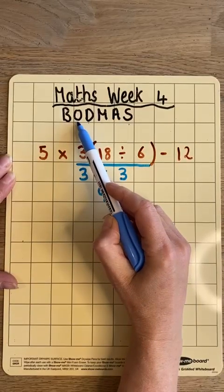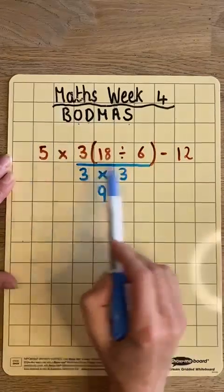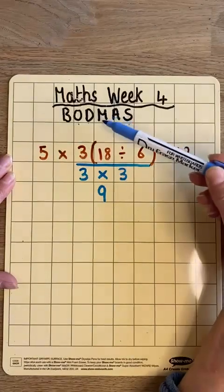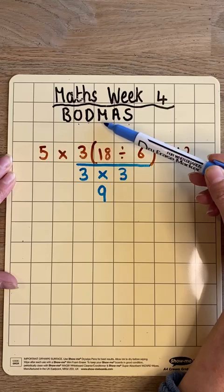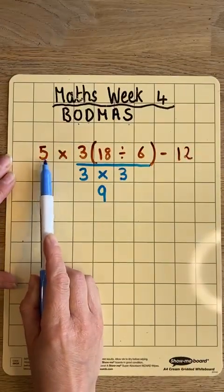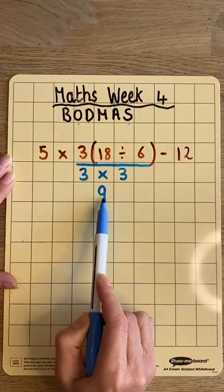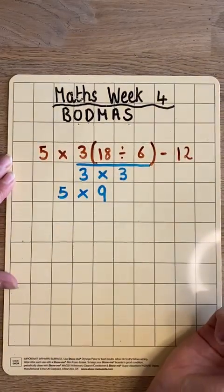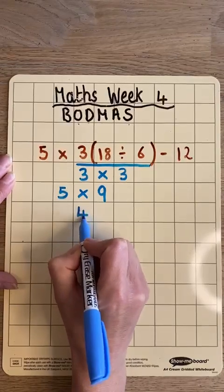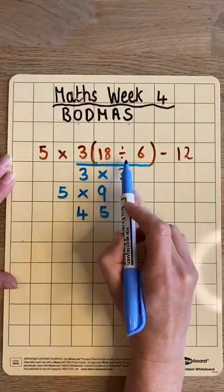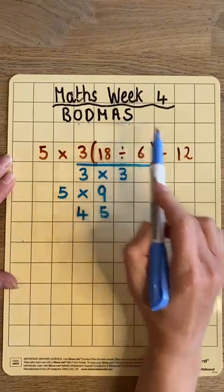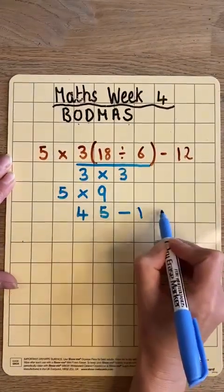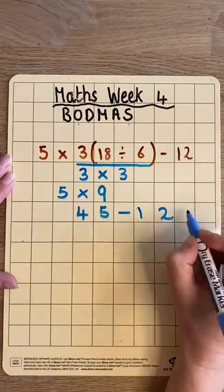Continuing along BODMAS — do I have any indices to do next? I don't. Any division? The division was inside the brackets so it's already done. Continuing on, I'm going to look for any multiplication. I do have multiplication: 5 times this, which I've already got as 9. So I'm going to put 5 times 9, and 5 times 9 is 45. I'm going to put my answer underneath and then continue along the rest of the sum. I don't have any addition. I do have subtraction. With my answer 45 I'm going to minus 12. 45 minus 12 is 33.